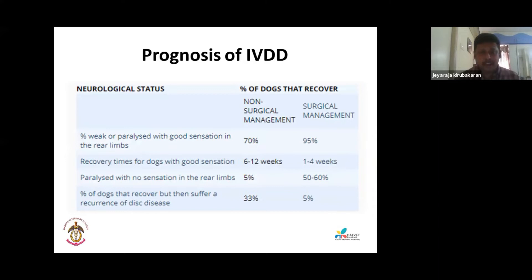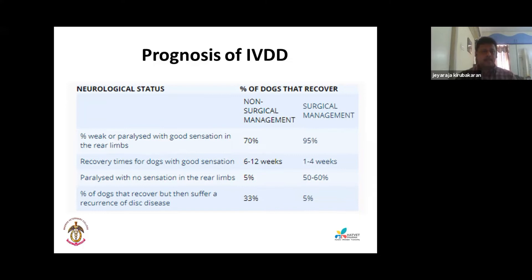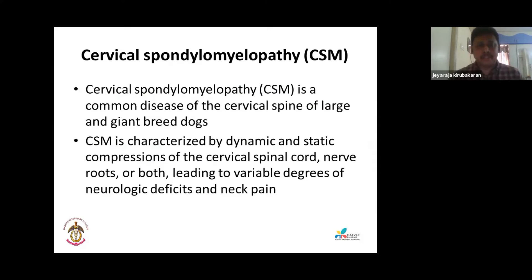Prognosis for IVDD: in a paralyzed dog with good rear limb sensation, non-surgical management gives 70% recovery and surgical management gives 90% recovery. Recovery time with surgery is one to four weeks, versus six to twelve weeks without surgery. If there is no sensation in a paralyzed animal, only 5% recover with non-surgical management, versus 50-60% with surgery. Recurrence is much higher with non-surgical management than with surgical management.